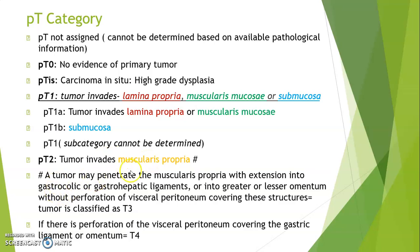A gastric tumor may penetrate the muscularis propria with extension into gastrocolic or gastrohepatic ligaments, or into the lesser or greater omentum, without perforation of the visceral peritoneum covering these structures — in that case it is classified as T3. But if there is perforation of the visceral peritoneum covering the gastric ligament or omentum, then it is T4.